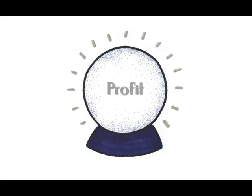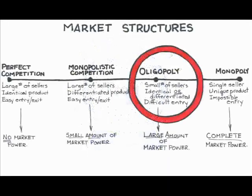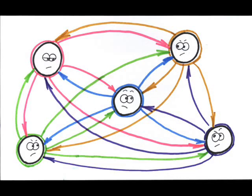At the beginning of this video, I said that the oligopoly is the most complex market structure. That's because the actions of any one firm will have an impact on all of the other players in the market.